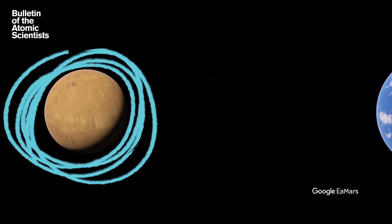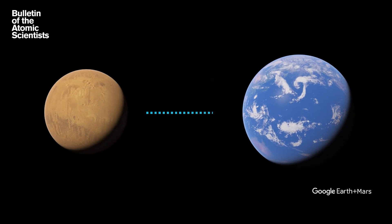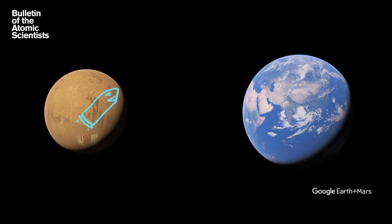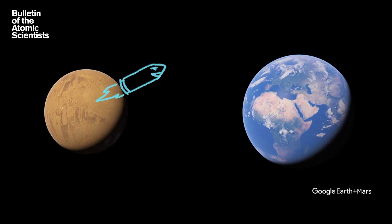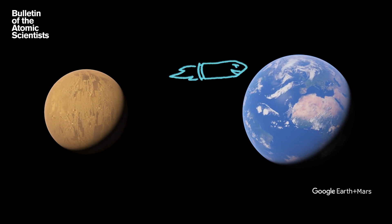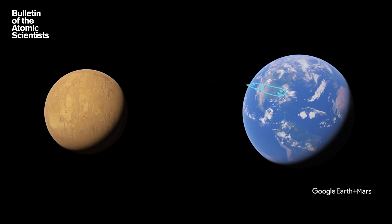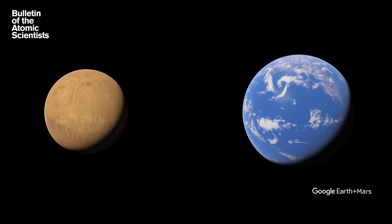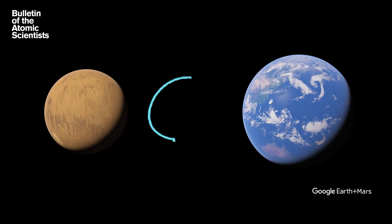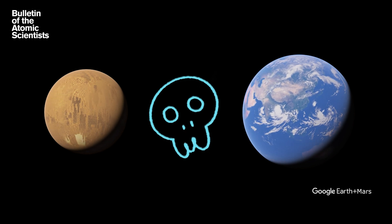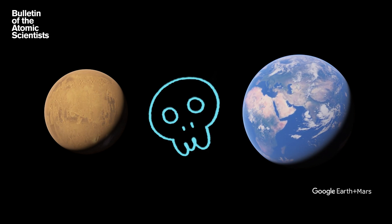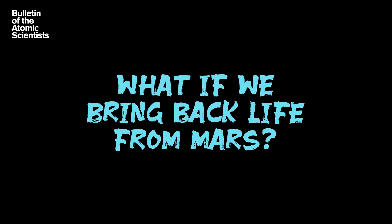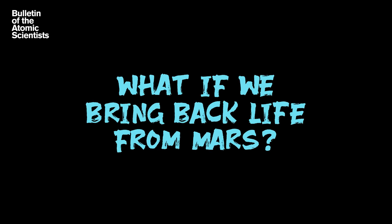Mars is 34 million miles away from Earth at its closest point. And over the next decade, NASA and the European Space Agency will spend billions of dollars to bring back rocks and dust from the Red Planet. They want to check for signs that life ever existed there. It's unlikely that this Mars sample return mission will bring back anything dangerous, but the Space Agency still need to prepare for the possibility that something in the samples is alive. So what happens if we bring back life from Mars?